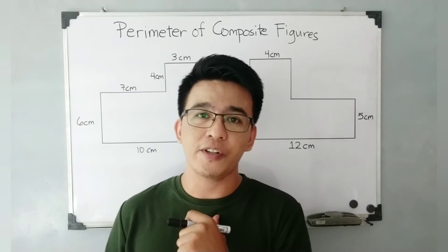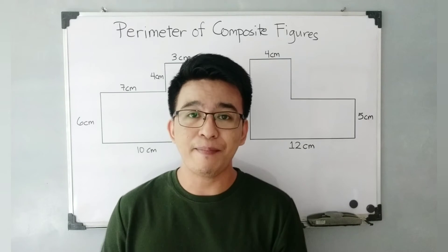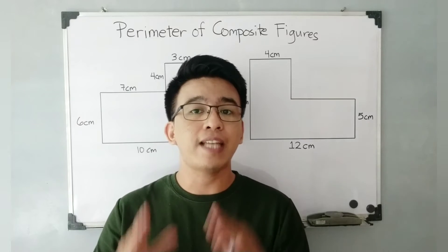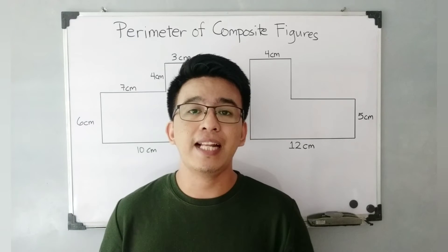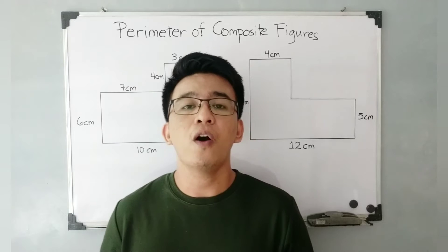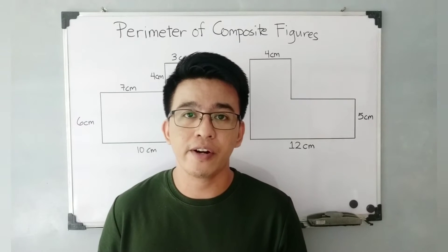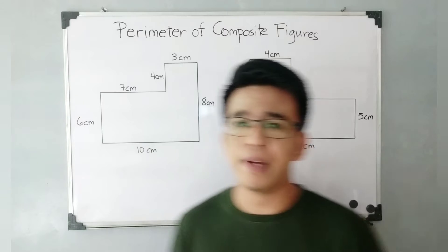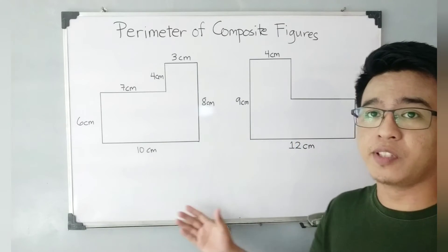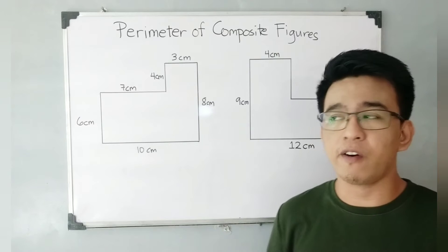Hi guys, it's me, Teacher Gohan. In today's video, we will talk about the perimeter of composite figures. When we say perimeter, it is the distance around a plane figure or a two-dimensional figure. So without further ado, let's do this topic.